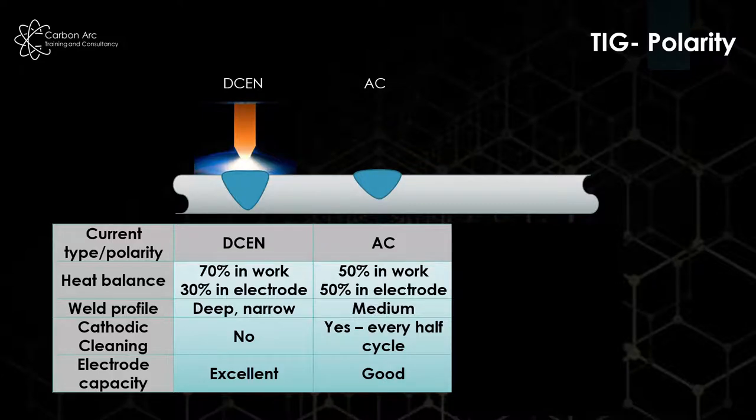We can run on AC, swapping between DC electrode negative and DC electrode positive very quickly, so now we've got a 50-50 split. We do start to see a little bit of melting in the electrode, but we get what we call cathodic cleaning which helps when we weld aluminum where we need to strip an oxide layer off between our welding cycles. Because we're putting more heat into the electrode itself for longer, our capacity drops from excellent to being okay.